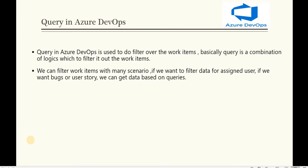For example, suppose I want to see how many bugs are created — I can create a query and it will give me the output of the number of bugs and all related records. We can filter work items by many scenarios: filtering by assigned user, bug, or user story. These are the kinds of scenarios where we use queries in Azure DevOps.